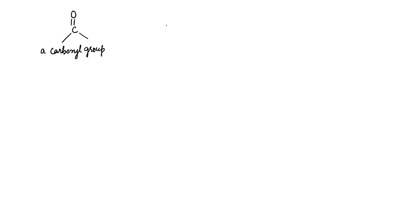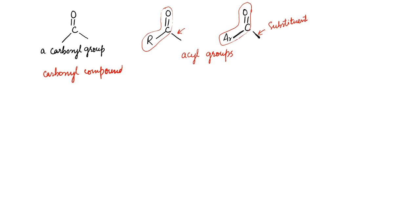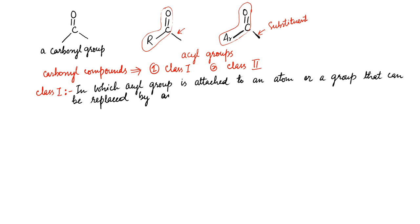An acyl group consists of a carbonyl group attached to an alkyl group or to an aryl group. The substituents attached to the acyl group strongly affect the reactivity of carbonyl compounds. Carbonyl compounds can be divided into two classes. Class I carbonyl compounds are those in which the acyl group is attached to an atom or a group that can be replaced by another group.